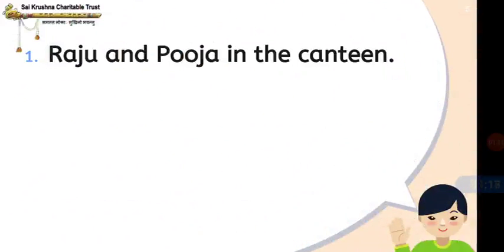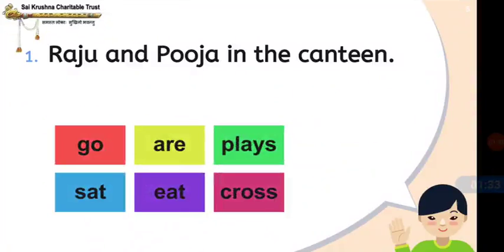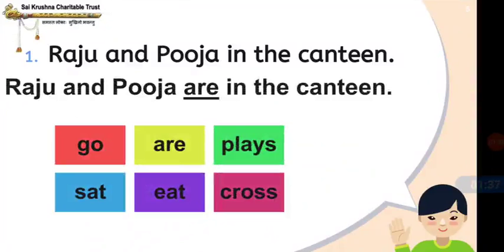I will read out the first question. Raju and Pooja in the canteen. Is this sentence fully correct children? What do we have to add? Let us see the options. We have to select one of the options. The correct option is are. The underline word is are. Raju and Pooja are in the canteen.